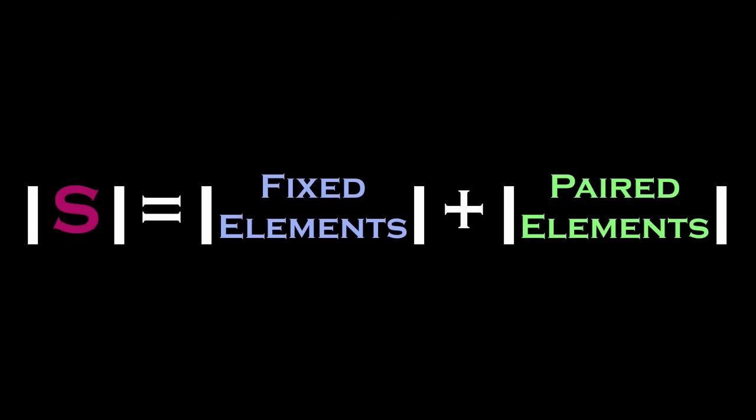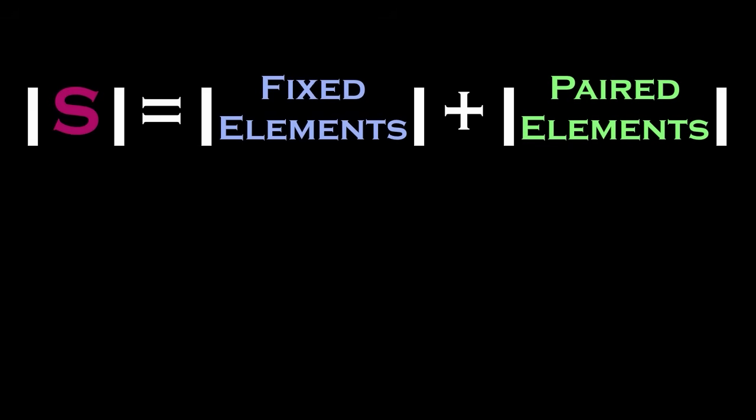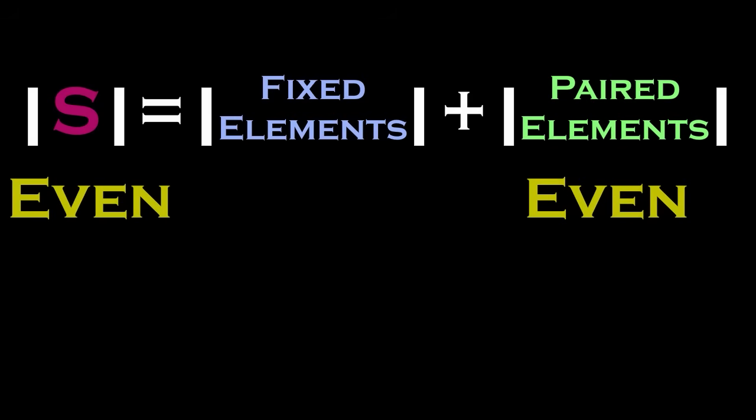The part that is important for our proof is when we consider how many elements our set has. Because an involution either maps elements to themselves or swaps two elements, the total number of elements in s can be represented as a sum of the number of fixed elements and the number of paired elements. Furthermore, we can consider the parity of s. The number of paired elements is always even, which means that if the number of elements of s is even, then the number of fixed points is even, since an even number plus an even number is an even number.